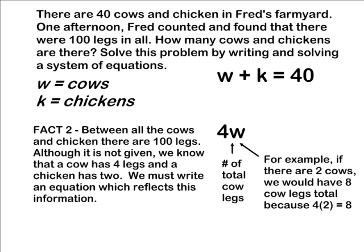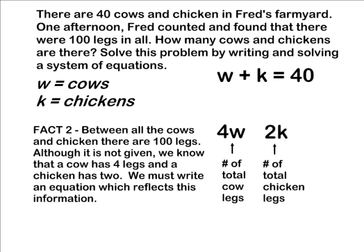The number of chickens is represented by k. If we multiply the number of chickens by 2, that gives us the total chicken legs. Adding the cow legs plus chicken legs should equal 100 total legs, so 4w plus 2k equals 100.